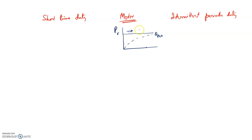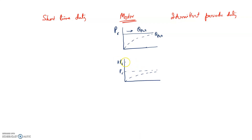Now if I overload my motor from PR to KPR, the steady state temperature rise will obviously change to a new value, θSS. So if I overload, θSS is the new steady state temperature rise corresponding to the overloaded condition KPR.